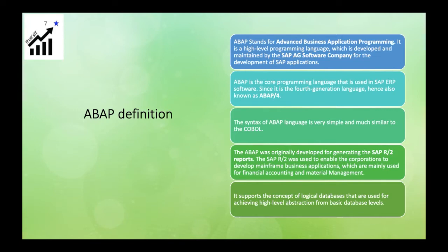When ABAP was developed, traditionally it was for developing reports. When SAP R2 — SAP Release 2 — was available, ABAP was released for report development. In those days, the main modules SAP used were Financial Accounting and Material Management, so ABAP was used for that purpose. ABAP also has the advantage of supporting the concept of logical database, which is used for high-level abstraction at the basic database level. If you want some logical database, ABAP can be used for that purpose as well.